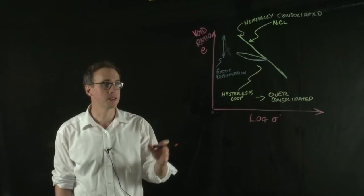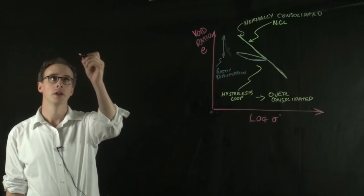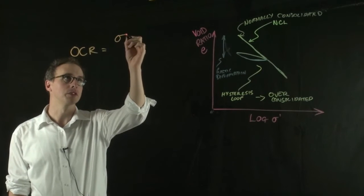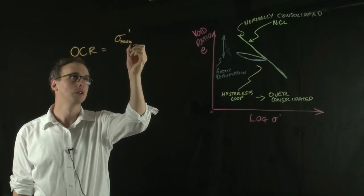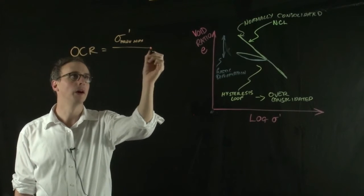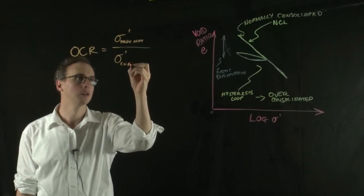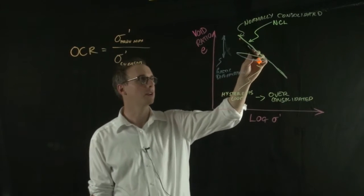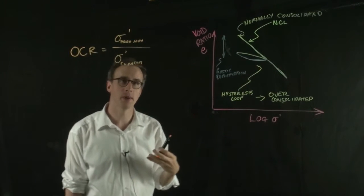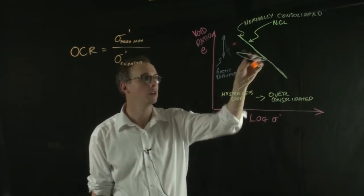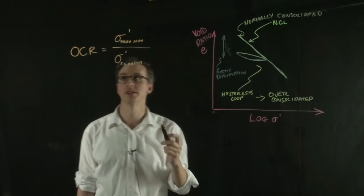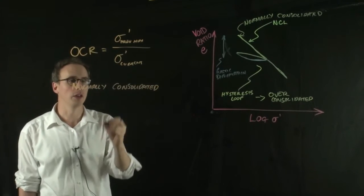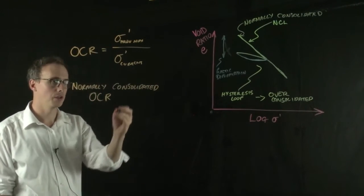We can express this mathematically as an over consolidation ratio, the OCR, which is equal to the previous maximum effective stress divided by the current effective stress. For soils on the normal compression line, the previous maximum stress is the same as their current stress, so they haven't had anything greater than what they're currently experiencing. For normally consolidated soils, the over consolidation ratio is equal to one.